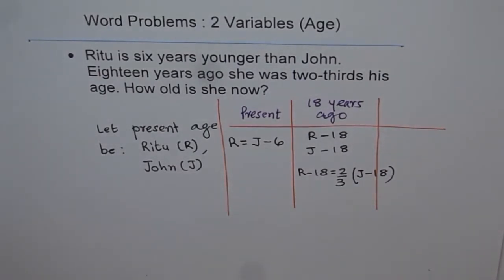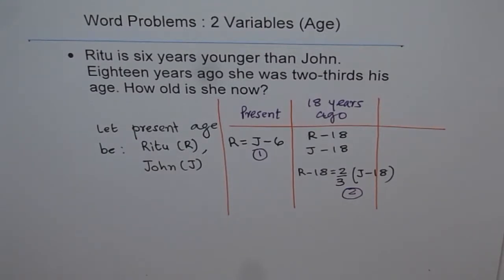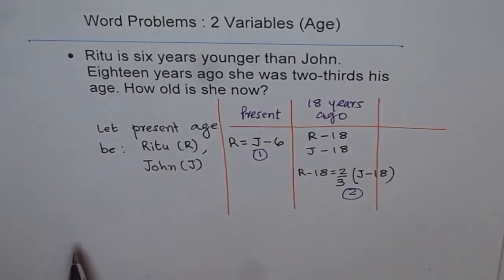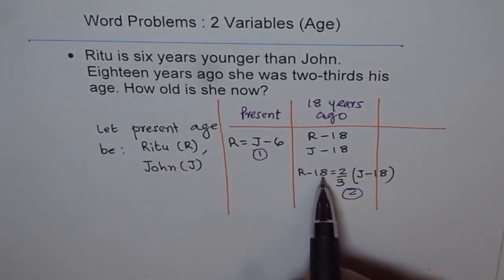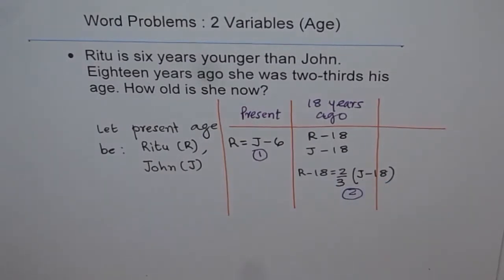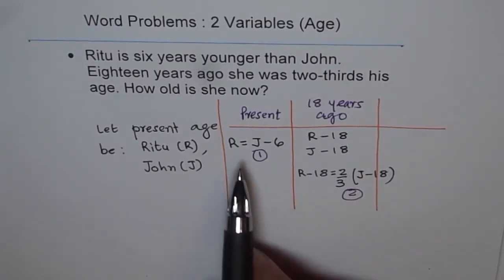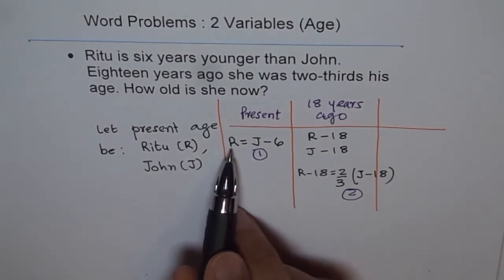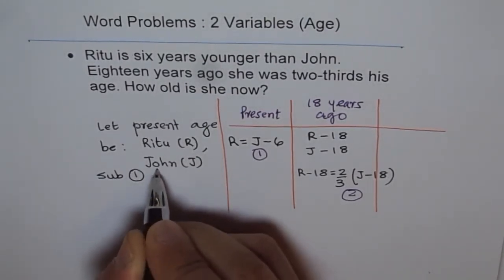We now have two equations: equation one is R = J − 6 (present condition), and equation two is R − 18 = (2/3)(J − 18) (18 years ago). Since we have two variables, we can solve them with two equations. Since we know one variable in terms of the other, substitution is a good method — we will replace R with J − 6 in equation two.